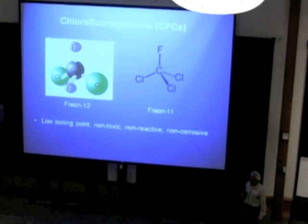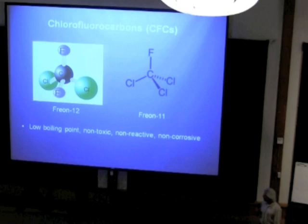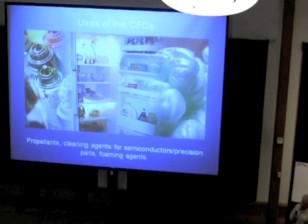These two compounds are specifically Freon 12 and Freon 11, are man-made and were trademarked by DuPont in the late 1920s because they made excellent refrigerants. They had low boiling point, they were non-toxic, non-reactive, non-corrosive, and they replaced things such as ammonia, which were really nasty to work with in refrigeration units.